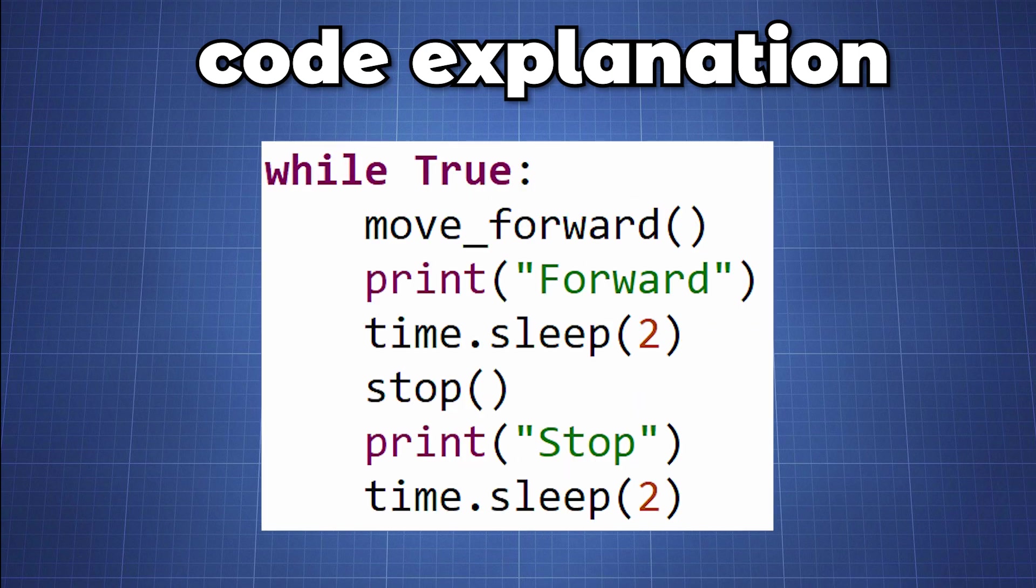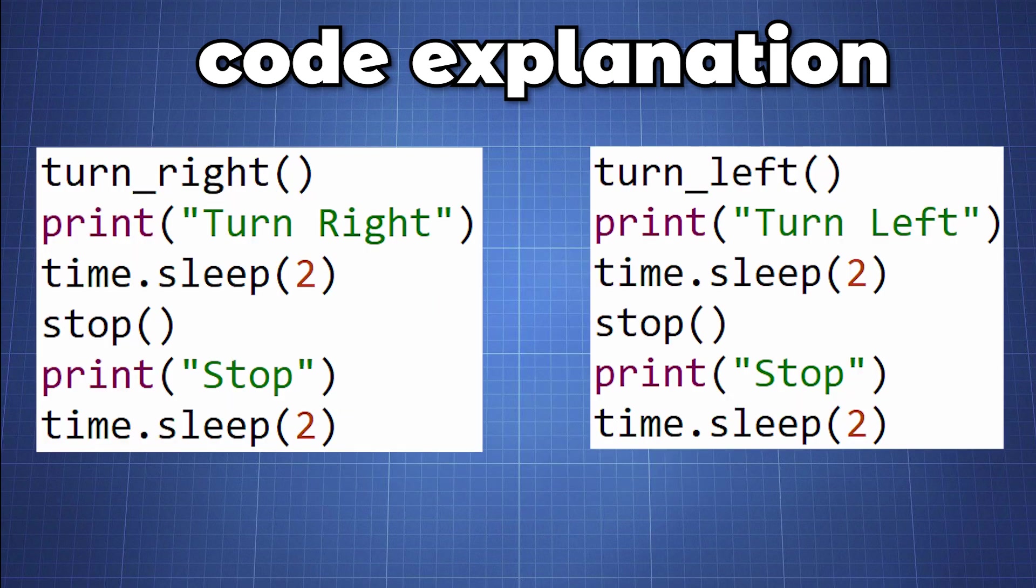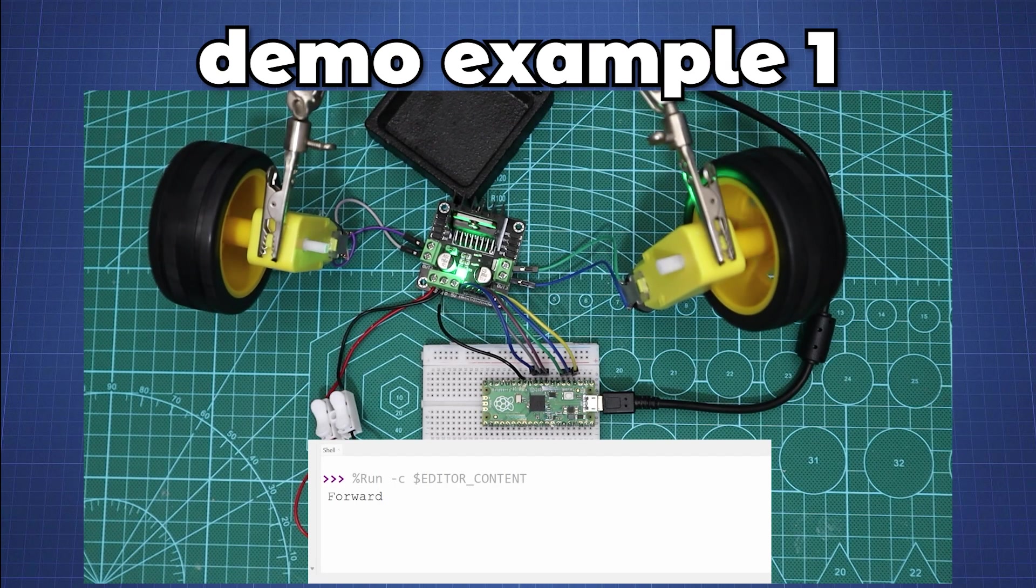Now we can create an endless loop to call the functions as needed with a delay. In this example we move the wheels forward for two seconds and stop, then rotate the wheels backward for two seconds and stop, and we will do the same for right and left before the loop repeats itself. Uploading the code to the Pico we can see that the motors are turning as indicated in the code.